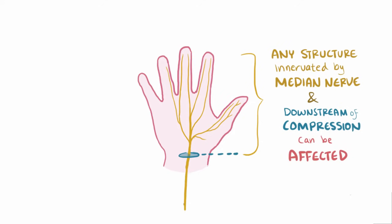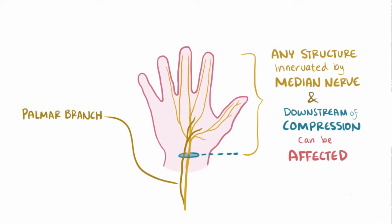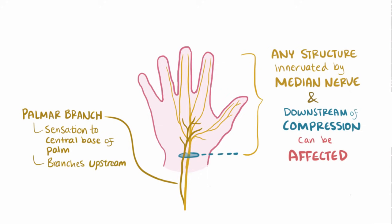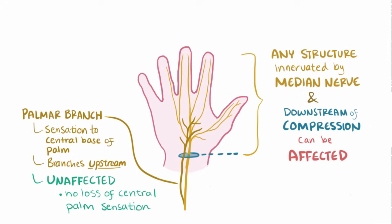Interestingly, a superficial sensory branch of the median nerve, called the palmar branch, provides sensation to the central base of the palm. Because this nerve branches upstream or proximal to the carpal tunnel and travels superficial to it, this nerve is not affected by carpal tunnel syndrome, and this is also why there's no loss in sensation in the central palm of the hand.